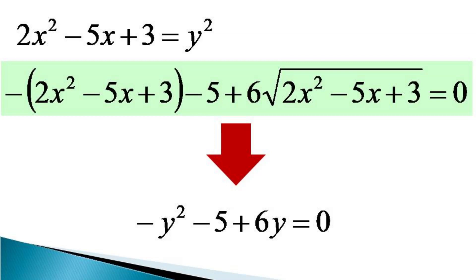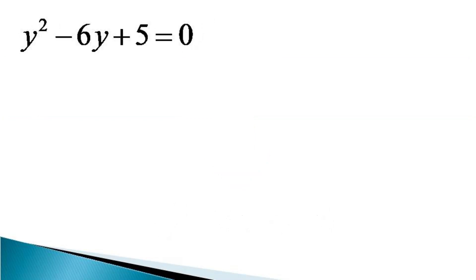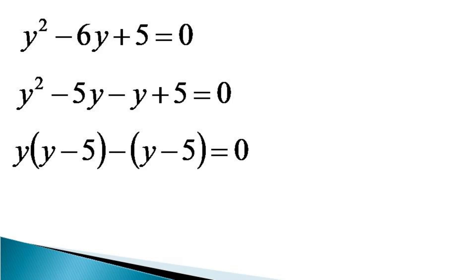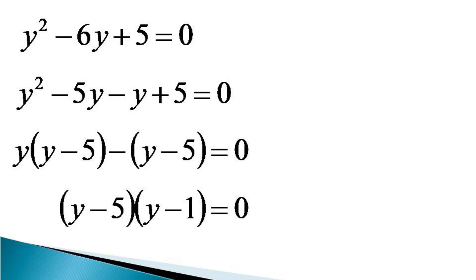This equation is multiplied by minus 1 and terms are adjusted to give: y² minus 6y plus 5 is equal to 0. This is a quadratic equation in y and can be solved by factorization. It is written as y² minus 5y minus y plus 5 equals 0. Taking y common from the first two terms and minus 1 common from the last two terms gives y(y minus 5) minus (y minus 5) is equal to 0. Taking (y minus 5) common, the equation becomes (y minus 5)(y minus 1) is equal to 0.